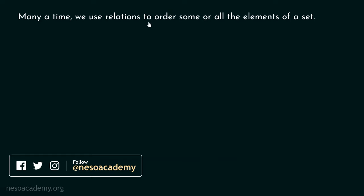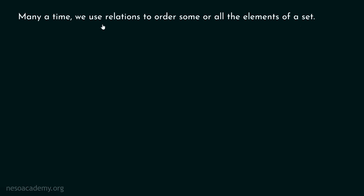Many a time we use relations to order some or all the elements of a set. It is important for us to understand that ordering is very important. We use relations to order some or all the elements of a set. Let's see this with the help of an example.